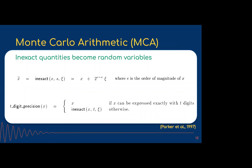If these errors are being introduced all the time and we're losing information, could we leverage this to simulate 'what if it rounded up instead of down?' This is where Monte Carlo arithmetic comes in. Instead of treating values as exact, we recognize that when a value can't be represented exactly, it is effectively a random variable — the stored value plus some noise at the least significant digit, uniformly distributed between negative one-half and positive one-half. This means 50% of the time something rounds up that was previously rounded down.